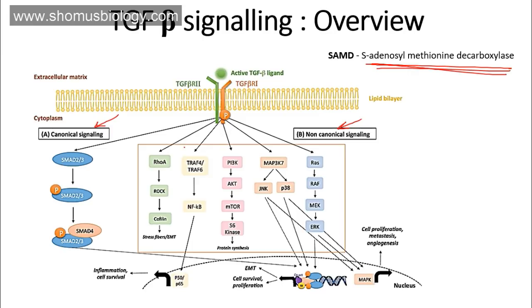In the canonical pathway, the active TGF beta ligand binds with the TGF beta receptor — type 1 and type 2. Once the ligand binds, TGF beta receptor type 2 is activated by phosphorylation and then phosphorylates TGF beta receptor type 1. This cross-phosphorylation activates the receptor, which then phosphorylates the SMAD 2/3 complex. SMAD 2/3 activates SMAD 4, and the SMAD 4/SMAD 2/3 complex enters the nucleus to regulate transcription of genes linked to cell proliferation, metastasis, and angiogenesis.